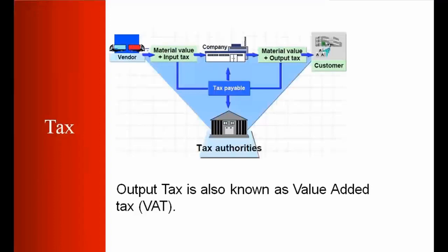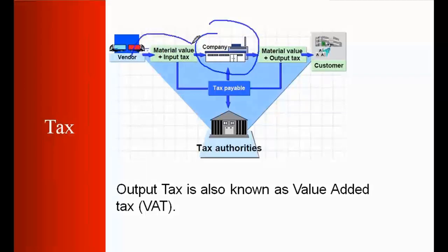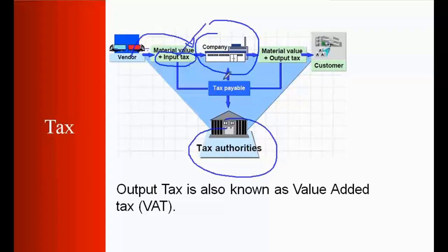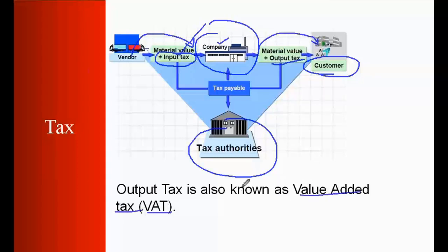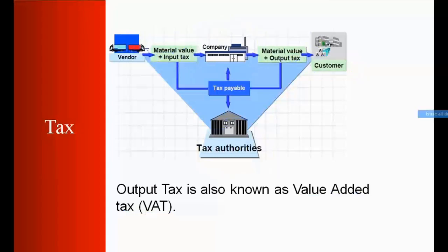First, let's talk about tax. Every country has some sort of tax rule. When buying raw material from a vendor, we need to pay some sort of input tax, which is governed by the tax authority of that country. Once our company produces the goods and sells them to the customer, we add output tax to the invoice for the final product. These output taxes are also known as value-added tax. Different countries charge different rates — some charge 10 percent, some 19 percent, some 12 percent — and we can customize those tax rules in our SAP system.